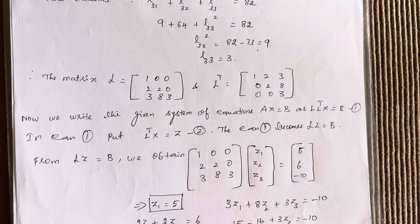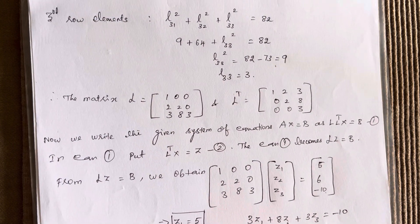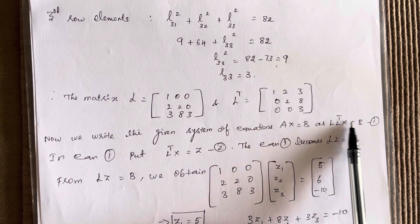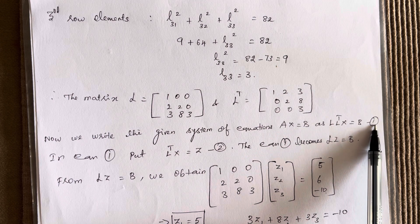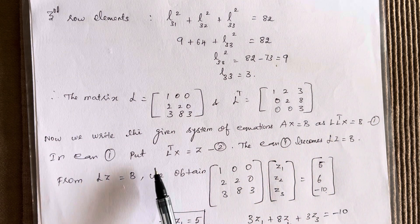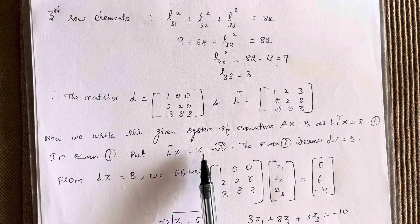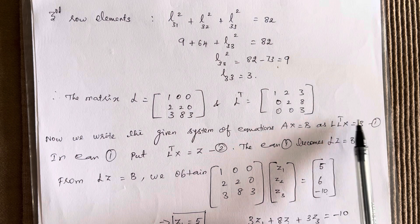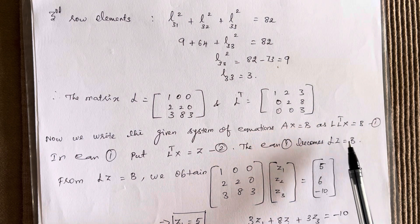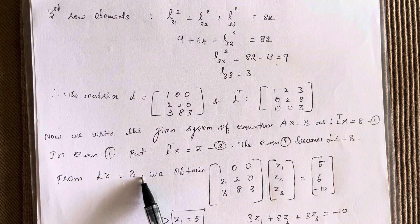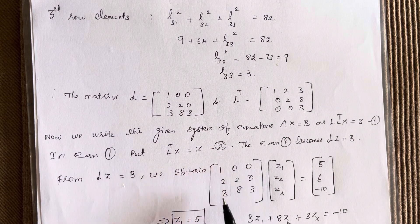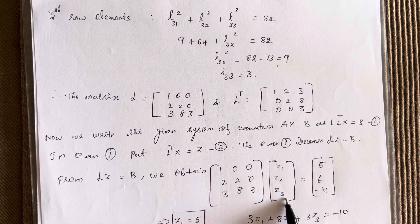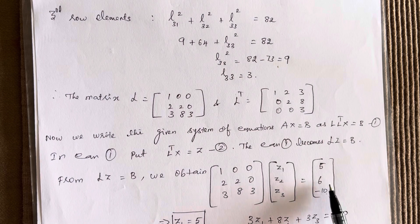We write the system as AX equal to B, and substituting A equals L·L transpose gives L·L transpose·X equal to B. Setting L transpose·X equal to Z reduces the equation to LZ equal to B. So L is 1,0,0 / 2,2,0 / 3,8,3, Z is the column matrix Z1, Z2, Z3, and B is 5, 6, minus 10.